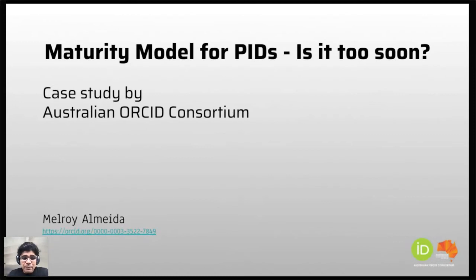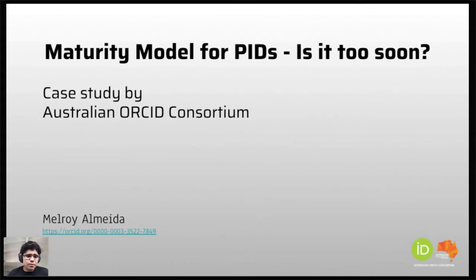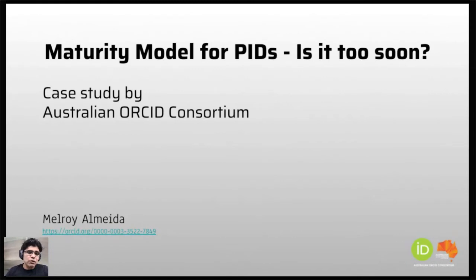For those of you who don't know, my name is Melroy, and I work with the Australian Access Federation Association, looking after the Australian ORCID Consortium, because we are the Australian ORCID Consortium leads. What I'm going to talk about today is a maturity model for persistent identifiers. My question to you as part of the PID community is, is it too soon to have a maturity model for PIDs, or is it too soon to be looking at the maturity of PIDs? So what we're doing is we recently ran a survey, and I'll be talking more about that in this presentation.